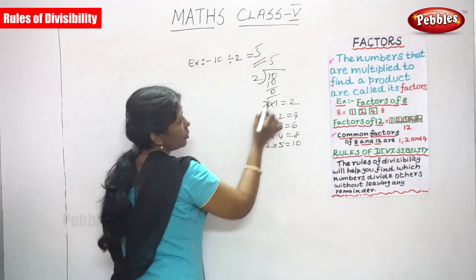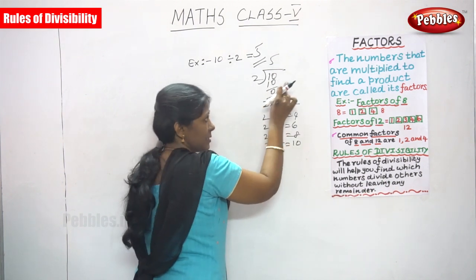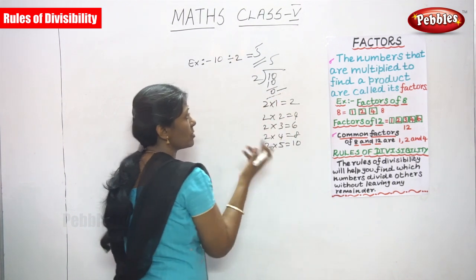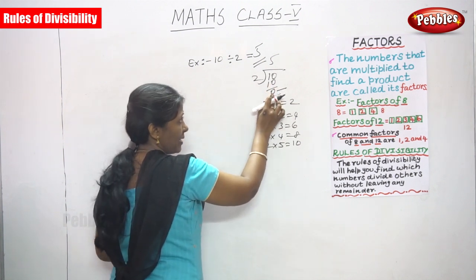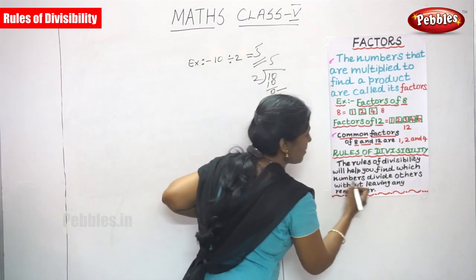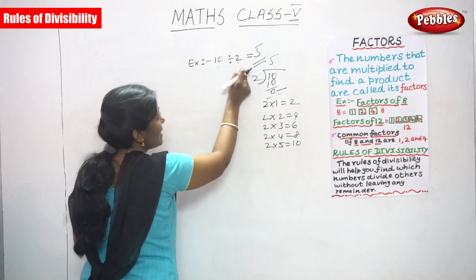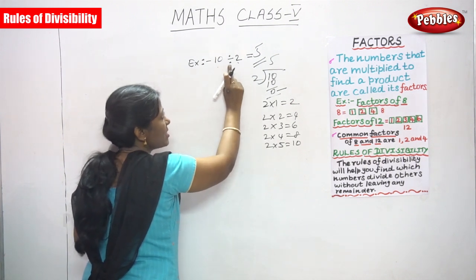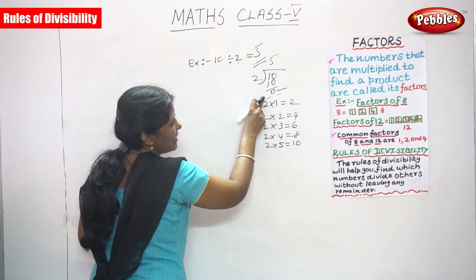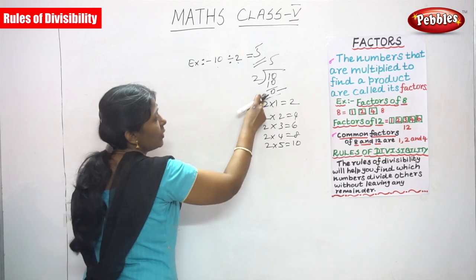The remainder is very essential — that is what is meant by without leaving any remainder. The remainder must be 0. There is no number in the remainder place. 10 is divided by 2, you get the answer 5, and the remainder is 0. The remainder will not come as a number.